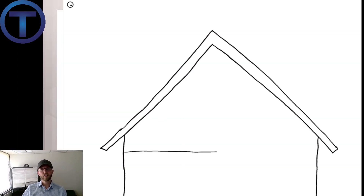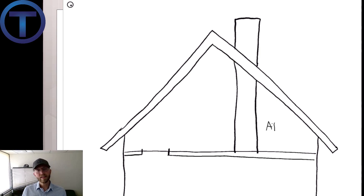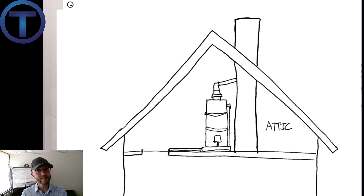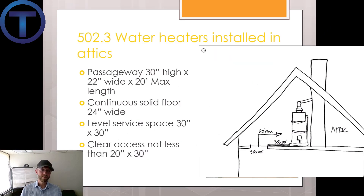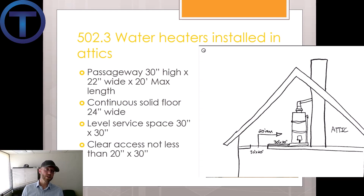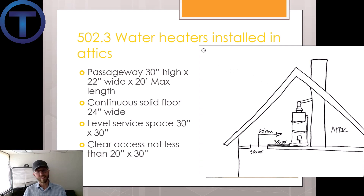Section 502.3 talks about water heaters installed in attics. Installing a tank-type water heater in an attic is never going to be fun, but it has been done. To make this as workable as possible, they require access: specifically a passageway that is 30 inches high and 22 inches wide with a 20-foot maximum length, so once you're up there you shouldn't have to go more than 20 feet to reach the water heater. There should be a continuous solid floor 24 inches wide leading to the water heater, a level work surface of 30 inches by 30 inches in front, and clear access not less than 20 inches by 30 inches.